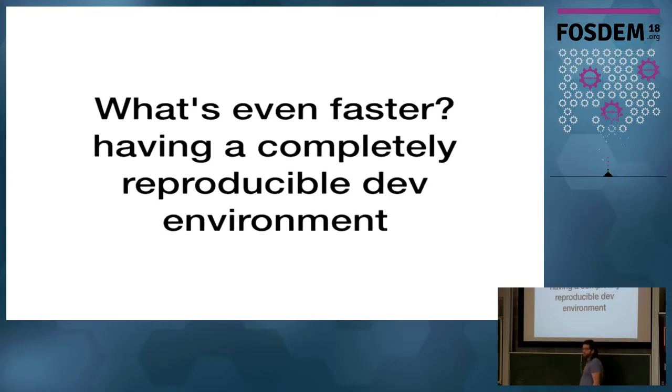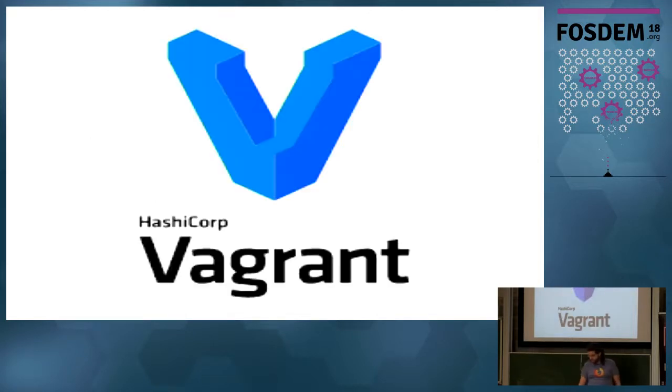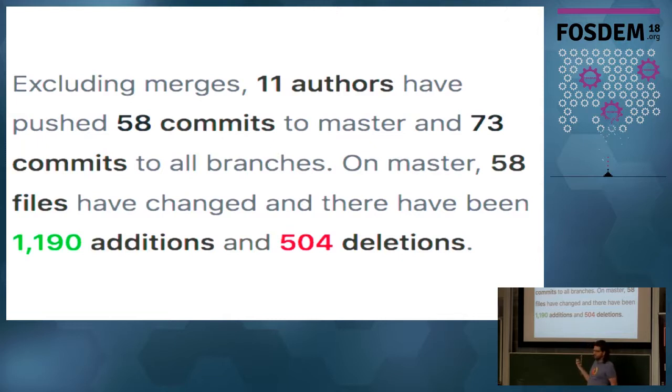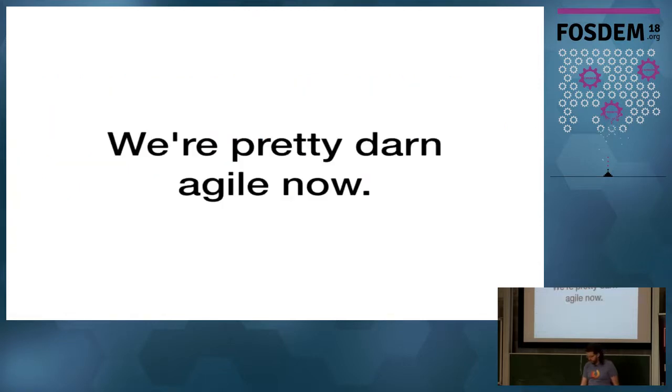But you know what's even faster than shipping features faster and being able to use new modules? What's faster than that is having a development environment that you can throw away and recreate as many times as you want. So I, at some point, created a Vagrant install. It was pretty easy to get it going. The stats for like the previous year, there were about three-ish people contributing on average on a given month to bugzilla.mozilla.org. In the last month, we've had 11. So we're actually pretty darn agile now. We accept pull requests. People can set up dev environments.